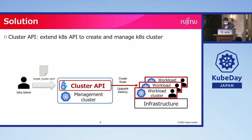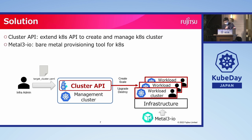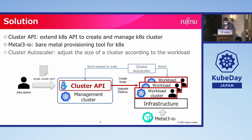The infrastructure can be cloud or bare metal. But no matter what infrastructure is used, there must exist an infrastructure provider component that provisions machines and networks for our clusters. For bare metal, Metal3.io can be that provider — it is a bare metal provisioning tool for Kubernetes, and with it we can install an OS to a bare metal server in the Kubernetes way. The last project is Cluster Autoscaler, which adjusts the size of a cluster according to workload. Using Cluster API, it watches a workload cluster and sends scale requests to Cluster API when necessary. Combining the three projects, we can automatically create, manage, and scale bare metal Kubernetes clusters.